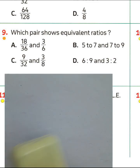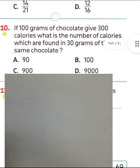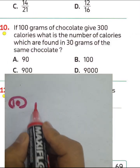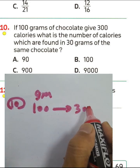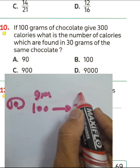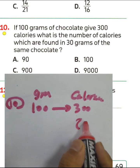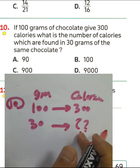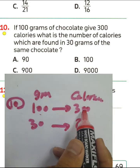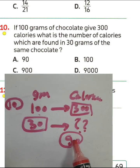Question number 10: if 100 grams of chocolate gives 300 calories, what is the number of calories in 30 grams? We find the number by proportion: 3 times 100 equals 300, and 3 times 30 equals 90. So the number of calories in 30 grams is 90. Choose letter E.